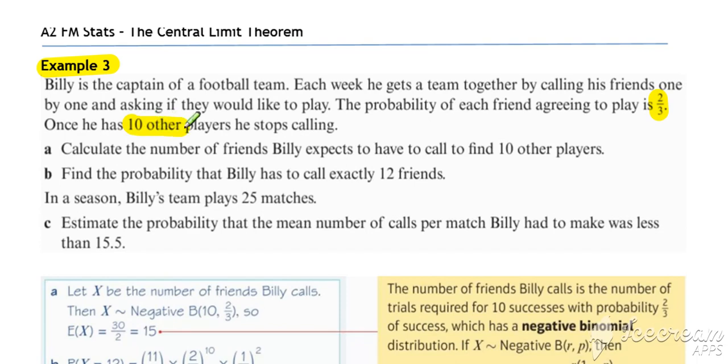Basically, it's a negative binomial—he repeatedly does trials until he gets 10 successes. We need to identify this as a negative binomial distribution to start with.